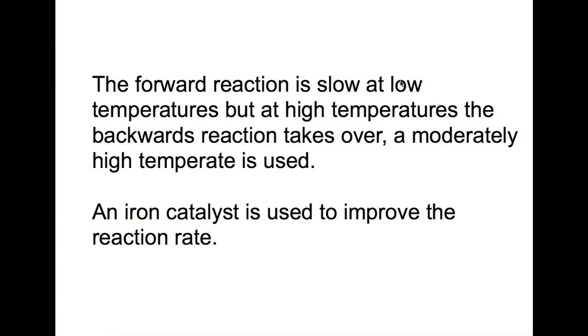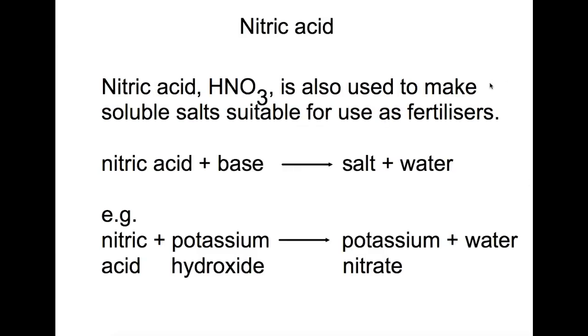Nitric acid is another useful compound which is used to make fertilizers. It also makes soluble salts when reacted with bases, so nitric acid plus a base will give you salt and water. For example, nitric acid and potassium hydroxide would produce the fertilizer potassium nitrate, containing both potassium and nitrogen, and water.